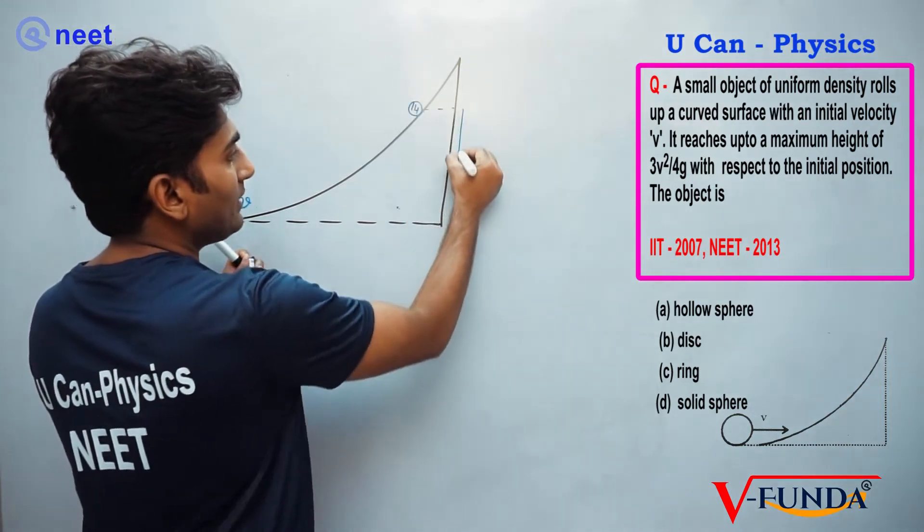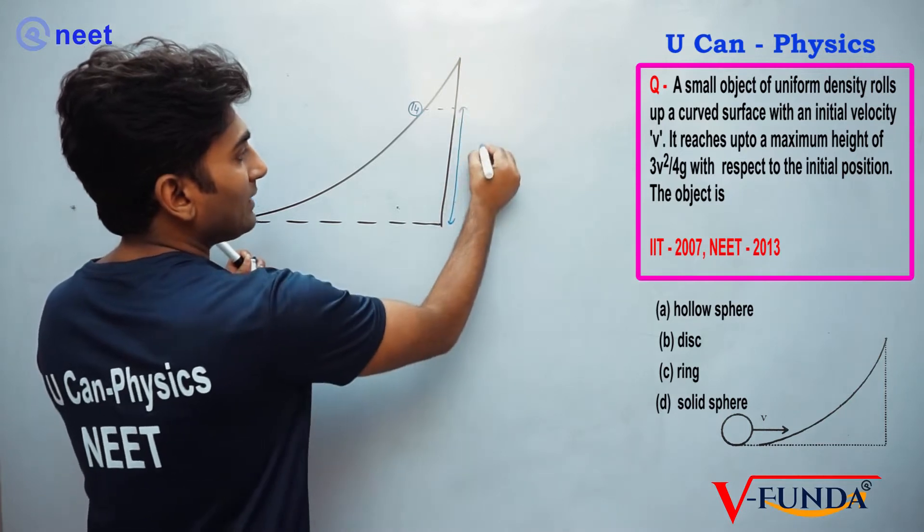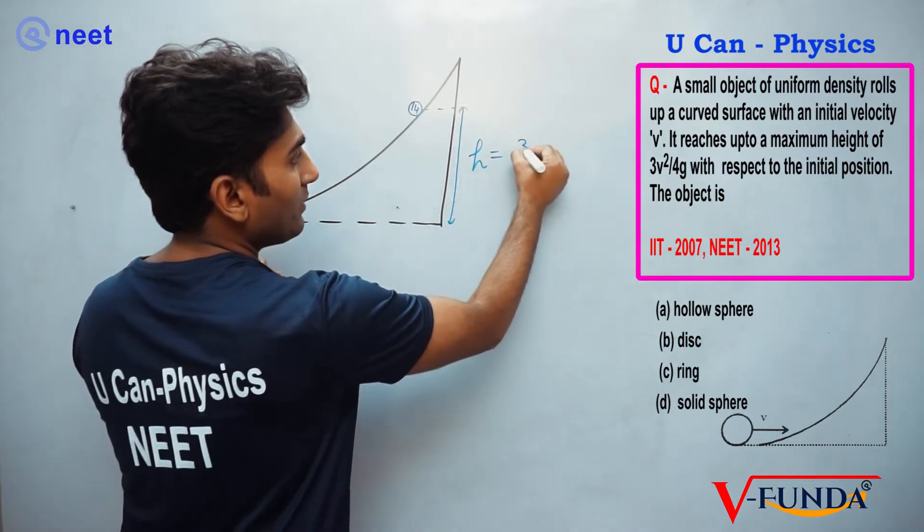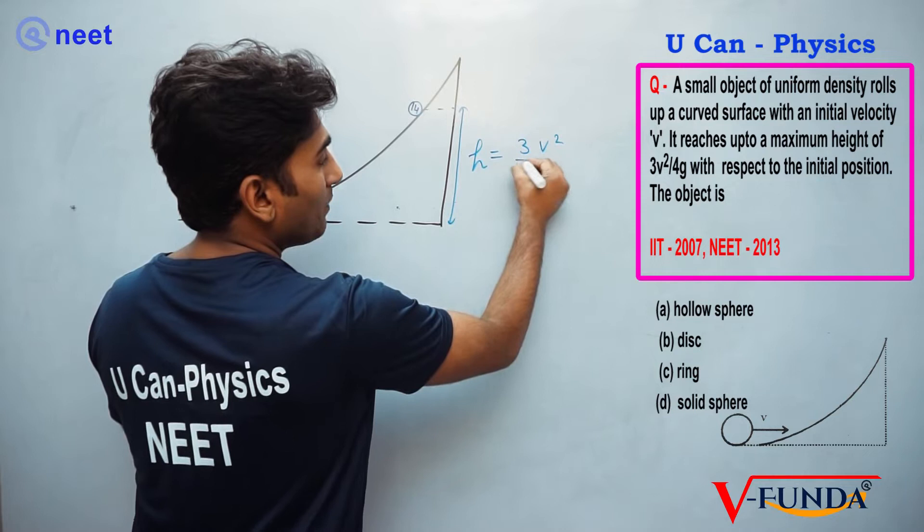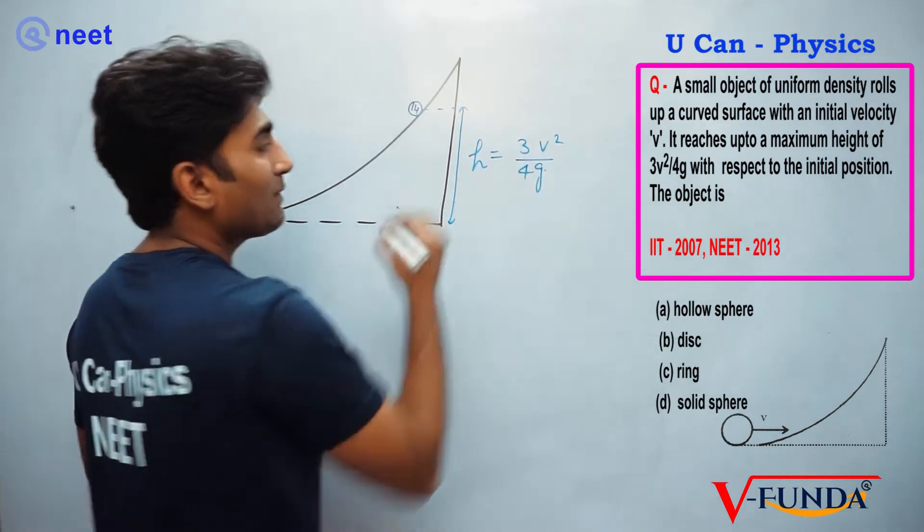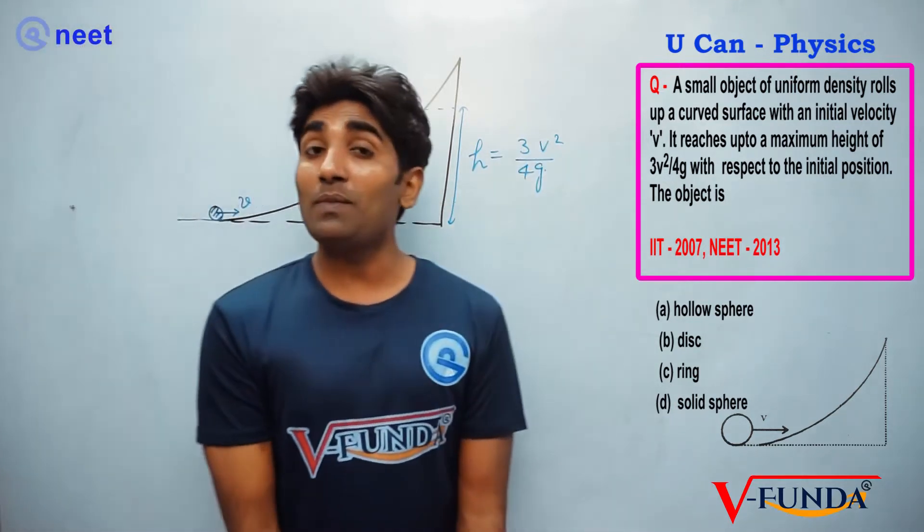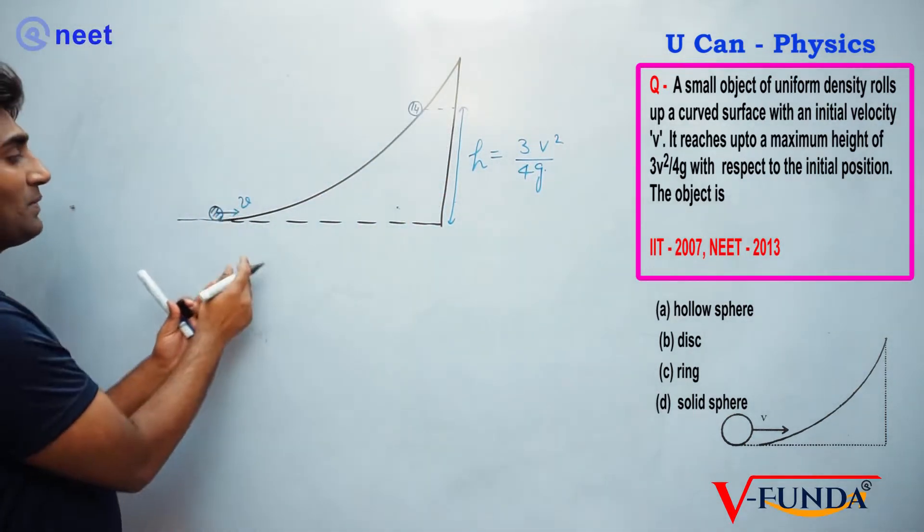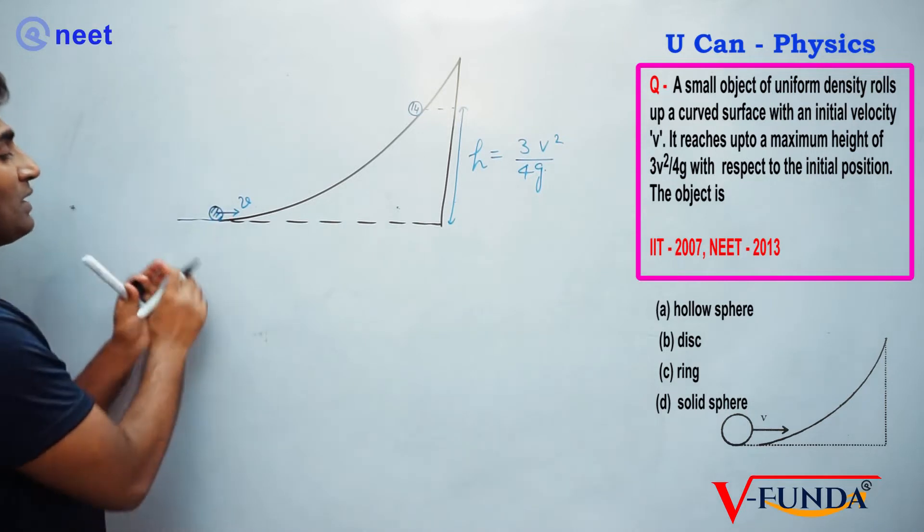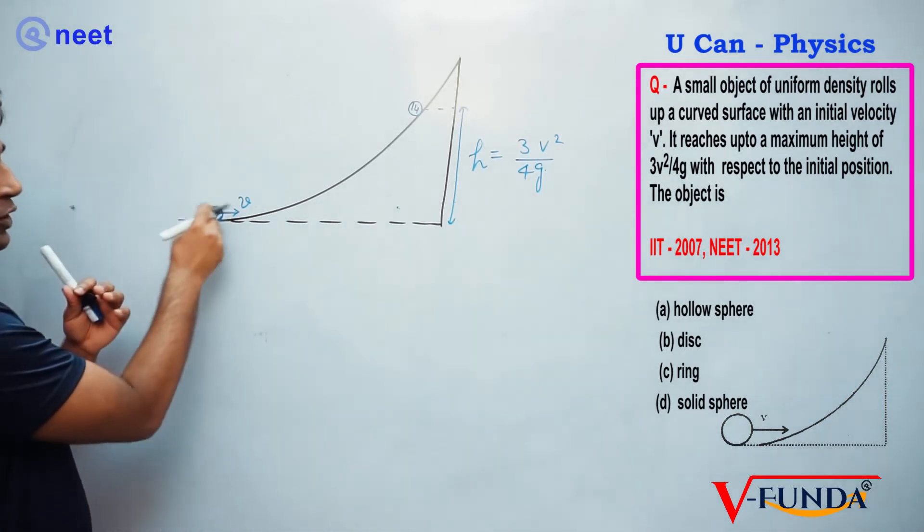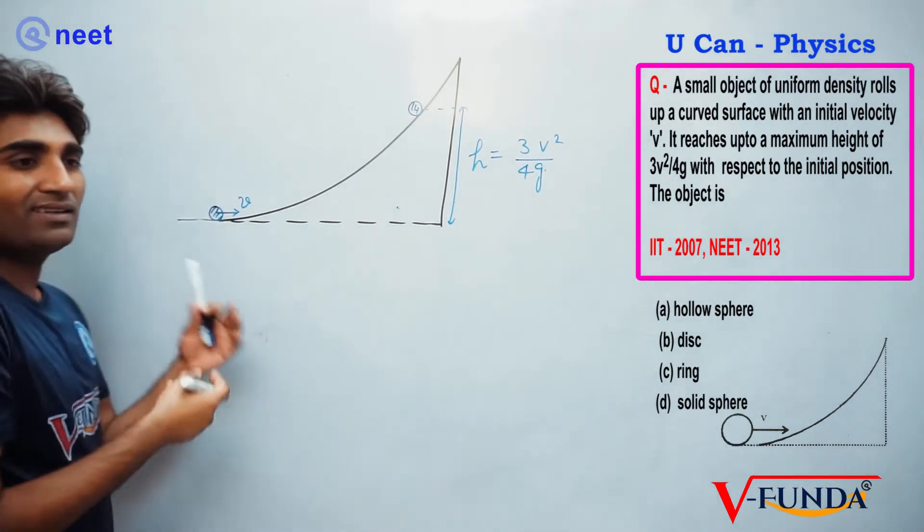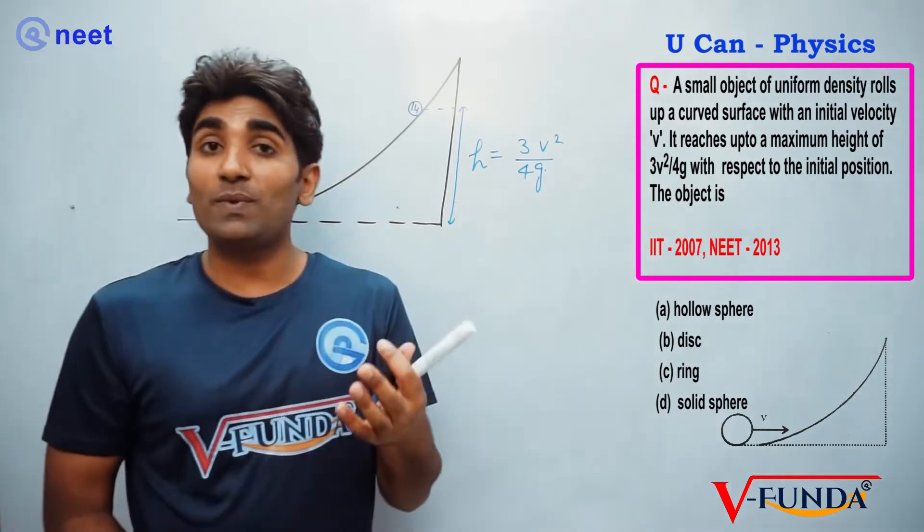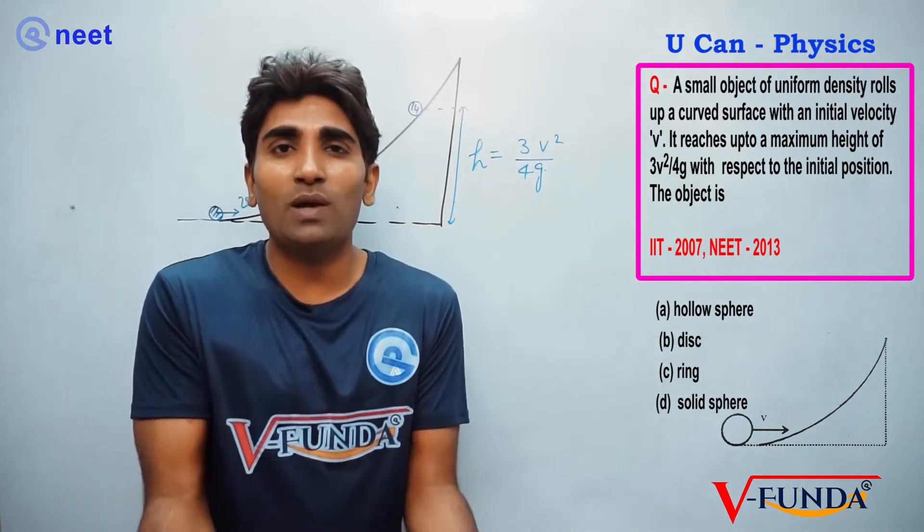It is going up and reaches a height of 3V²/4G. Now how to solve this problem?